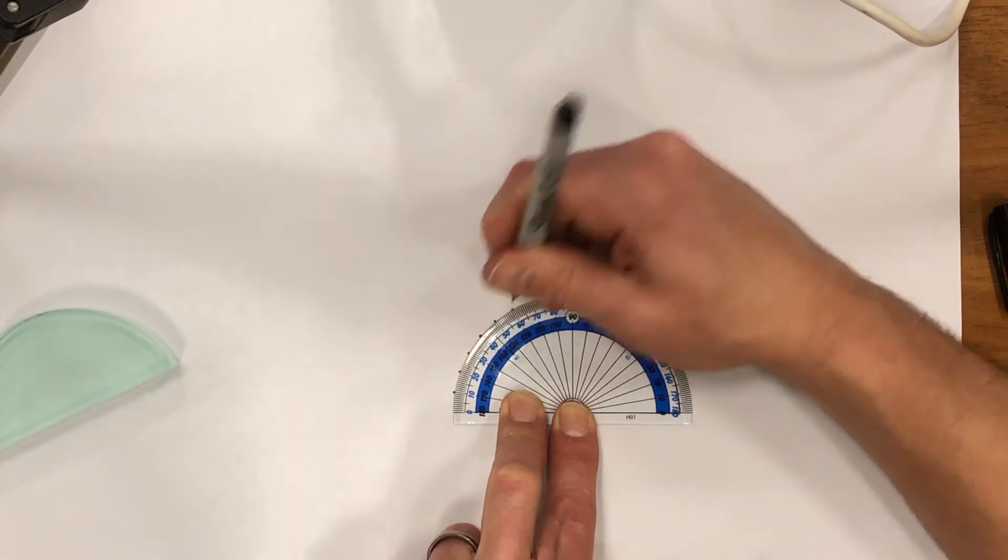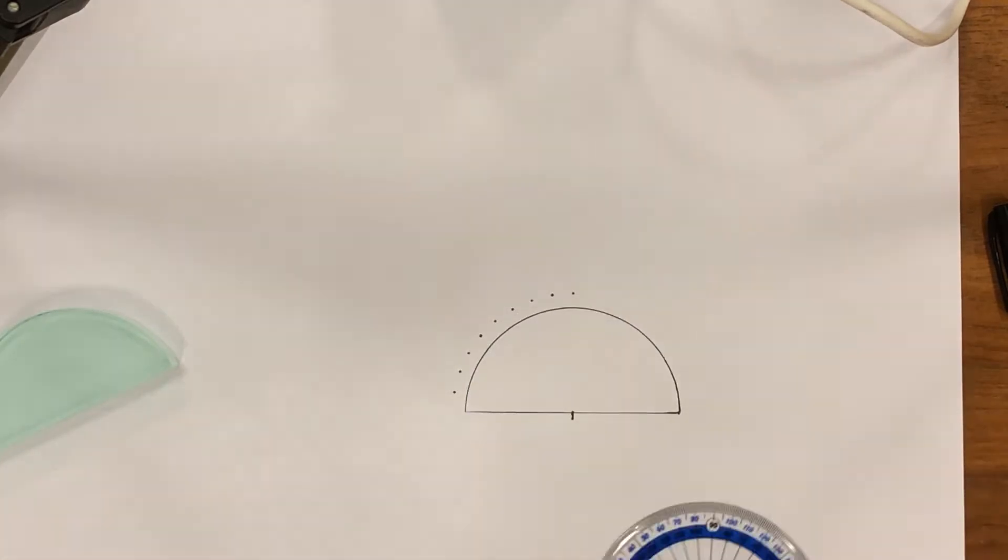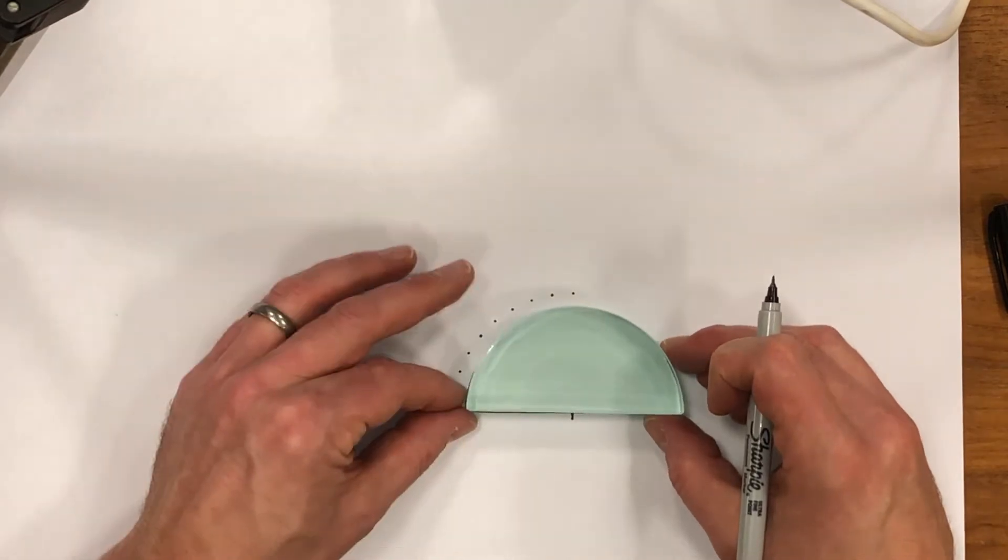I now use a protractor to mark every 10 degrees to show the route where the ray will enter the block.